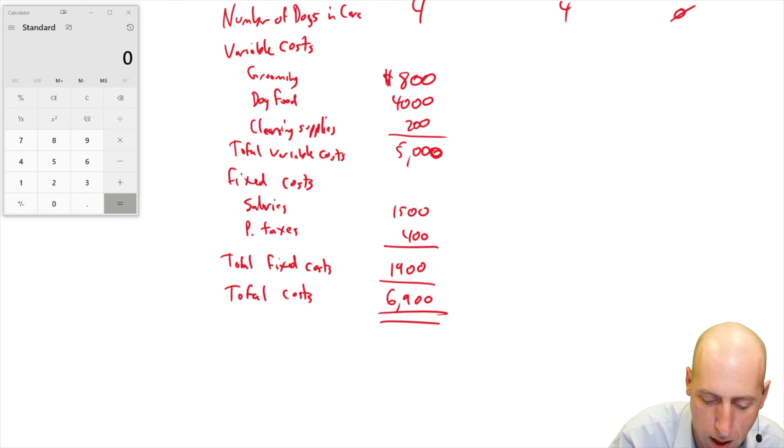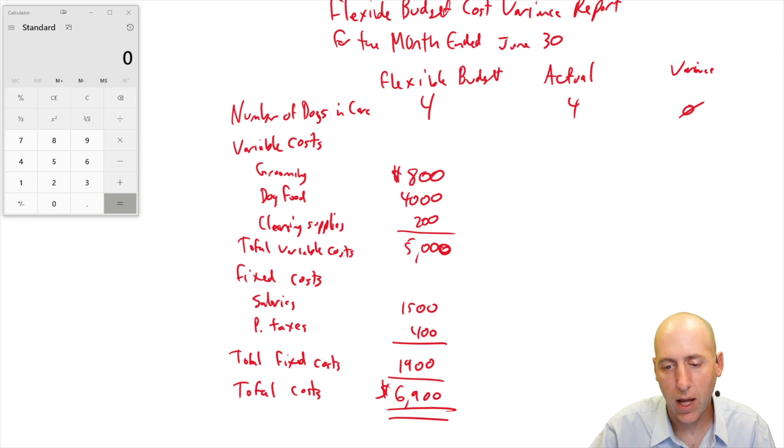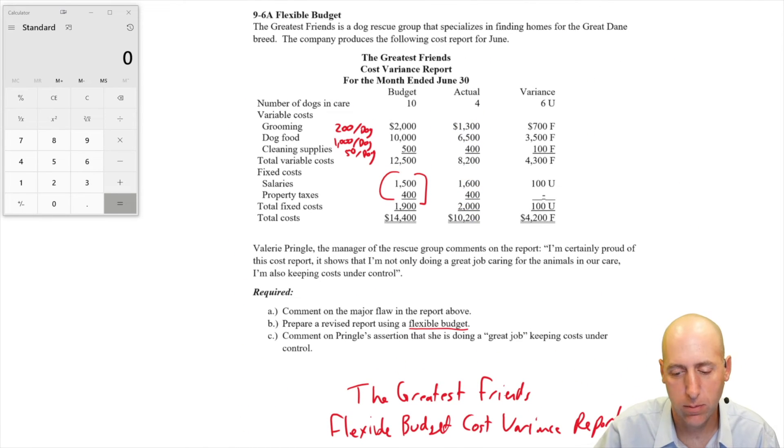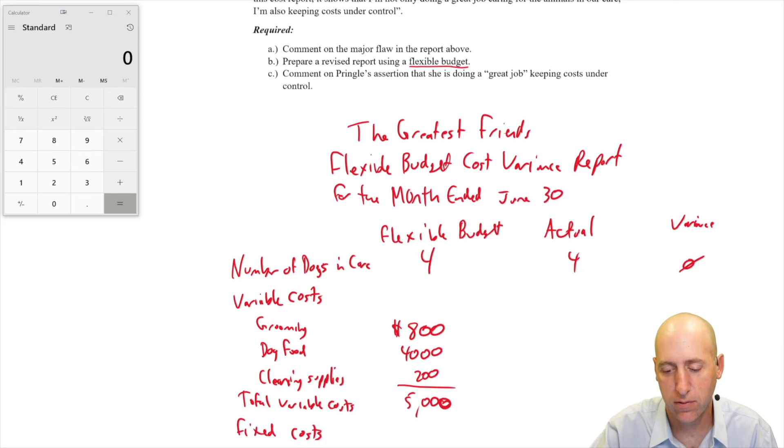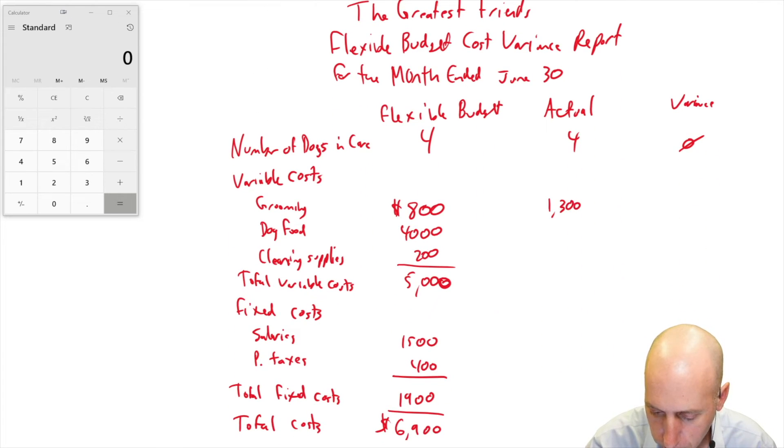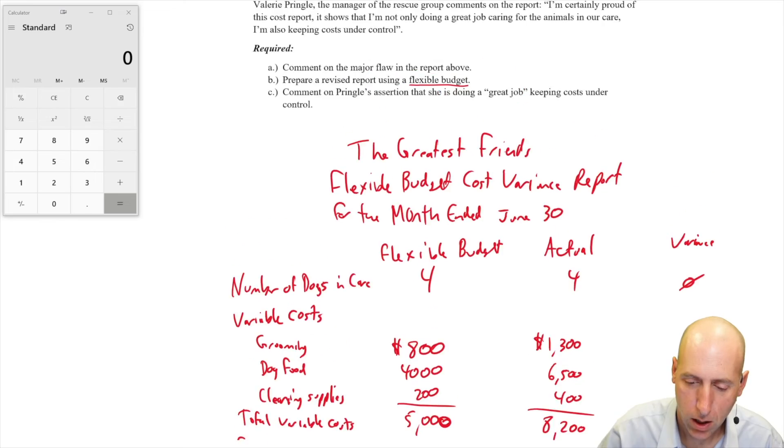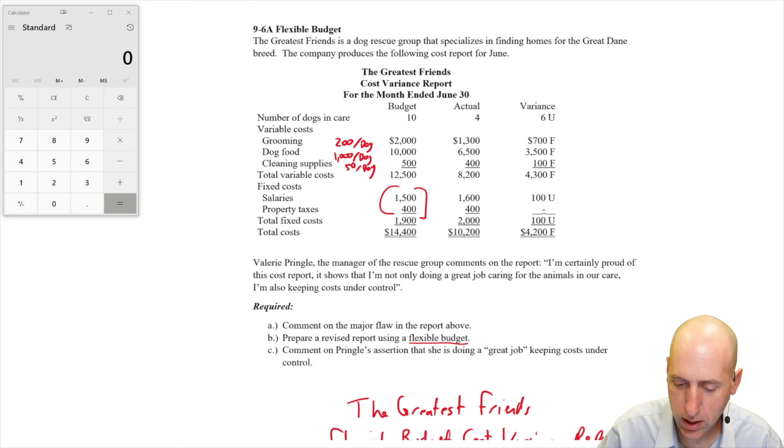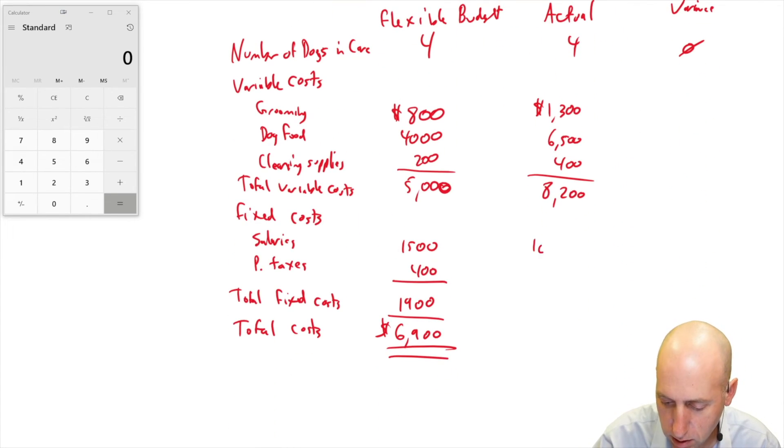Put dollar signs at the top and dollar signs at the bottom, and we're good to go. So now the actuals, we do just take this actual column, letter for letter, $1,300, $6,500, $400. Adding those together, $8,200. Our fixed were $1,600, $400 for a total of $2,000 for a grand total of $10,200.